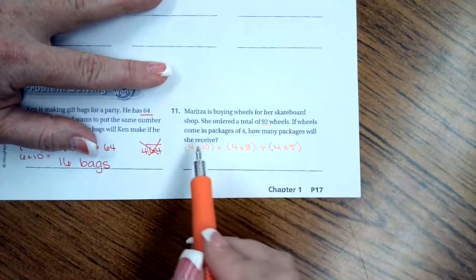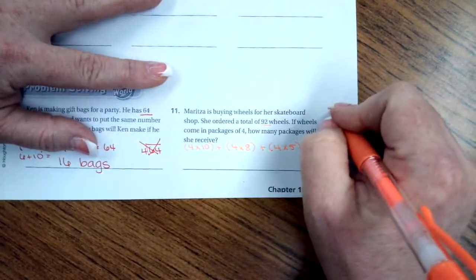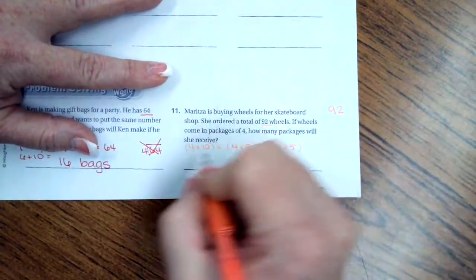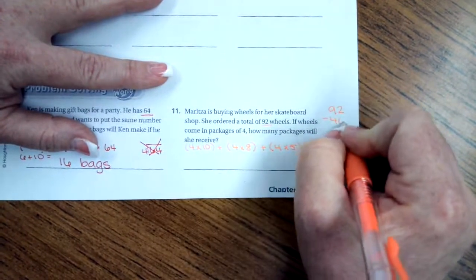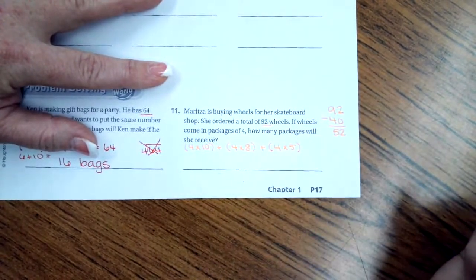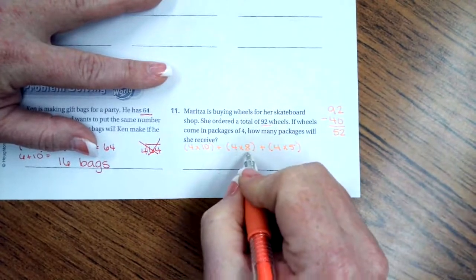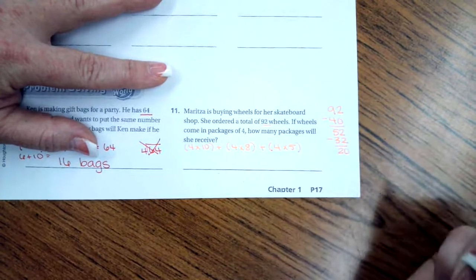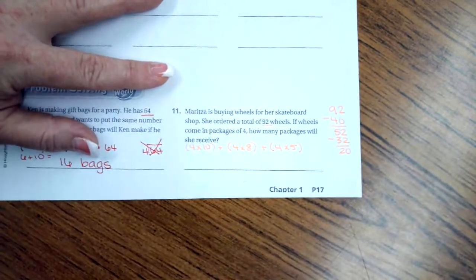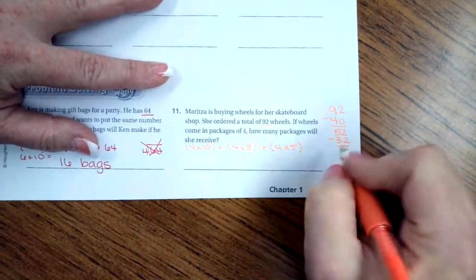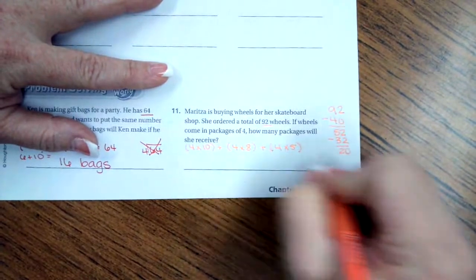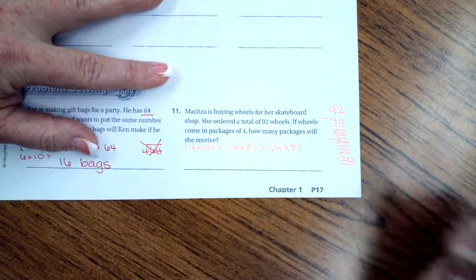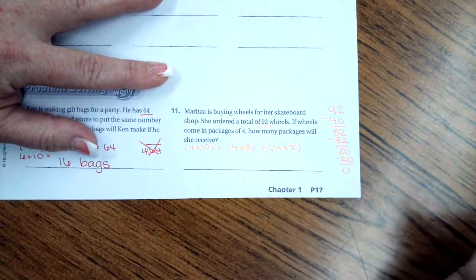So if I take 32 away from 52, then I'm only left with 52. And then I know that 4 times 5 is 20. So 4 times 10, I'm going to start with 92. 4 times 10 is 40, so when I take away, I get 52 left. Now, 4 times 8 is 32, so if I take 32 away, I'm left with 20. If I do 4 times 5, it takes away that 20. I'm left with 0.